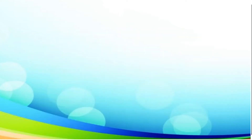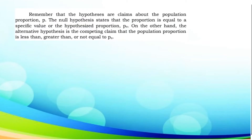Now, let us take this given statement. Remember that the hypotheses are claims about the population proportion. The null hypothesis states that the proportion is equal to a specific value or the hypothesized proportion. On the other hand, the alternative hypothesis is the competing claim that the population proportion is less than, greater than, or not equal to the hypothesized proportion.